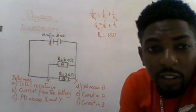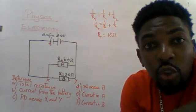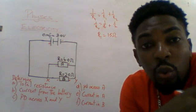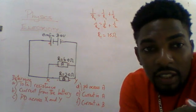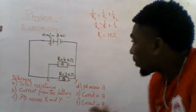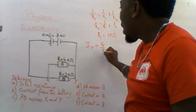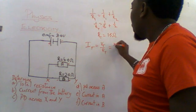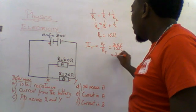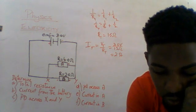We want to find the current delivered from the battery, which means the total current. The total voltage is the EMF — 3 volts — and the total resistance is 1.5 ohms. Therefore, I_total equals V_total over R_total: 3 volts divided by 1.5 ohms, which is 2 amps. The total current delivered is 2 amps.